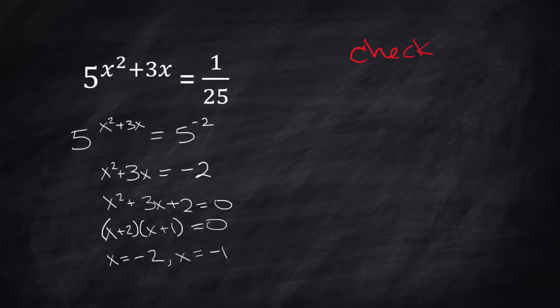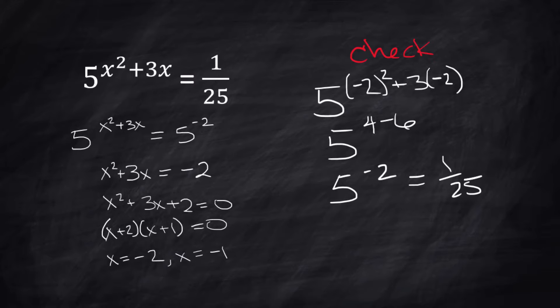If x = -2 and I pop that in here, we have 5^((-2)² + 3(-2)), wondering if that equals 1/25. 5^(4 - 6) = 5^(-2). We know that equals 1/25, so that one works.